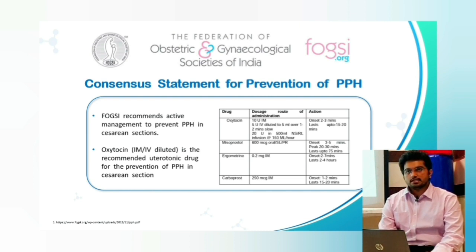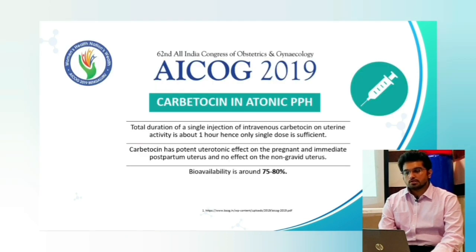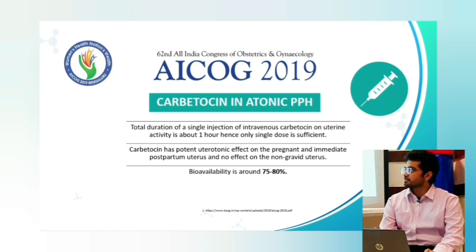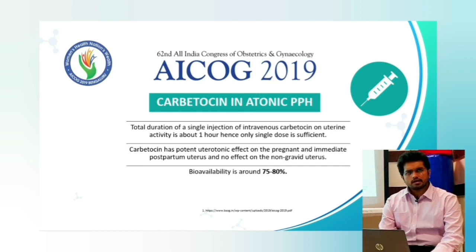The AICOG 2019 guidelines on carbutocin for atonic postpartum hemorrhage state that the total duration of a single injection of intravenous carbutocin on uterine activity is about 1 hour, hence only a single dose is sufficient. Carbutocin has a potent uterotonic effect on the pregnant and immediate postpartum uterus and has no effect on a non-gravid uterus. The bioavailability is 75–80%. Carbutocin is essentially a long-acting oxytocin.